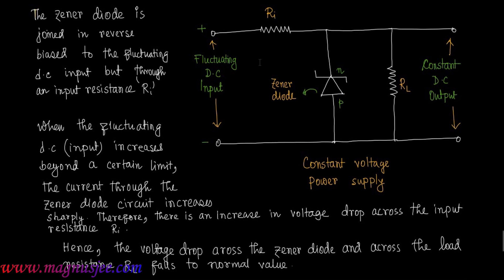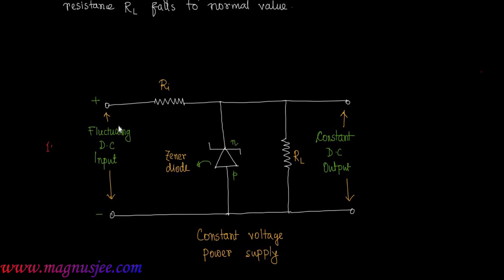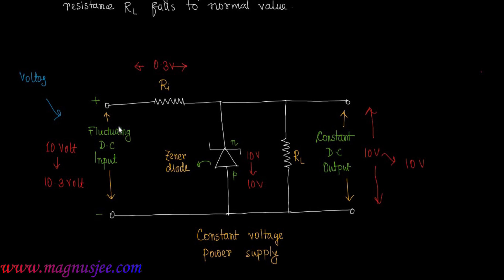For another example: initial voltage was 10 volts, voltage across the Zener diode is 10 volts, and voltage across the load resistance RL at the output terminal is 10 volts. Now it changes to 10.3 volts. The difference in voltage — 0.3 volts — will be obtained across the input resistance RI. So if the voltage at the input fluctuates, the voltage at the output terminals remains constant.